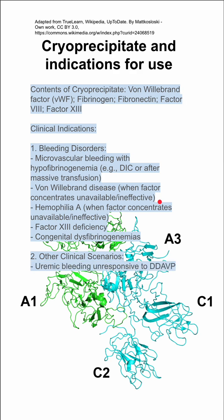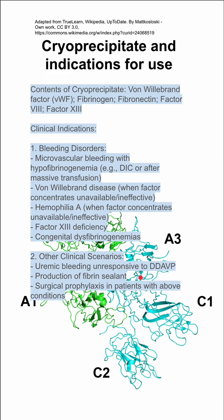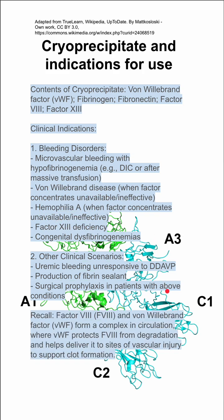There are other clinical scenarios that warrant the use of cryoprecipitate: uremic bleeding that's unresponsive to vasopressin, production of a fibrin sealant, and surgical prophylaxis in patients with conditions like hemophilia A, factor XIII deficiency, and von Willebrand disease.